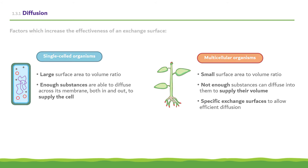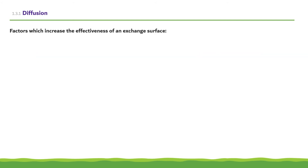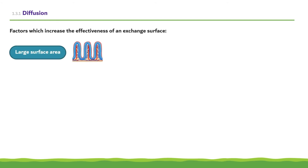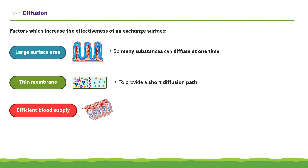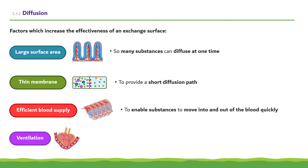There are four main factors which affect the effectiveness of an exchange surface. Effectiveness is increased by having a large surface area so that many substances can diffuse at one time, a thin membrane to provide a short diffusion path, and in animals, an efficient blood supply to enable substances to move into and out of the blood quickly, and ventilation of gas exchange surfaces to bring fresh air and remove waste products.